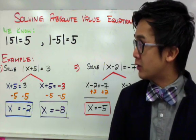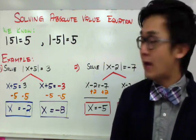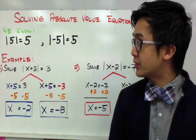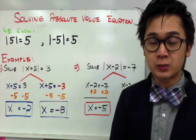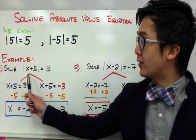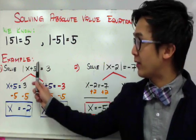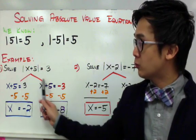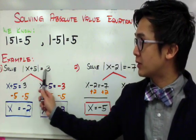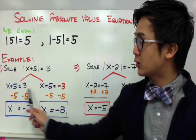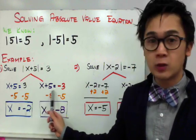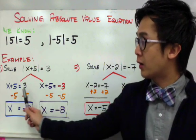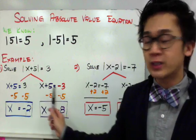Now, in our equation, for example number 1, we have to solve the absolute value of x plus 5 is equal to 3. The process for solving an absolute value equation is pretty simple. Whenever you have an absolute value equal to a number, you have to split it into 2: x plus 5 equals positive 3, and x plus 5 equals negative 3. You need to solve it for the positive number and its opposite.